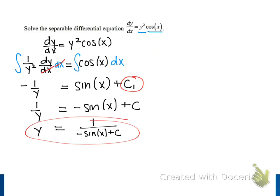And so that's our general solution to the differential equation. So we have y equals 1 over negative sine of x plus c. We note that there are really infinitely many different solutions, which are determined by the specific value of that constant c.